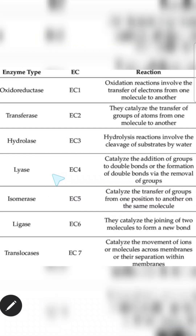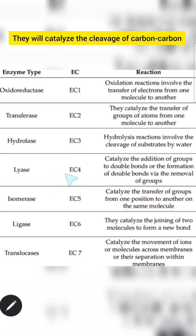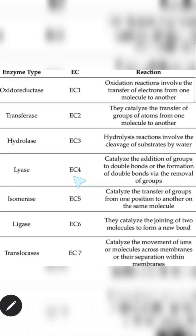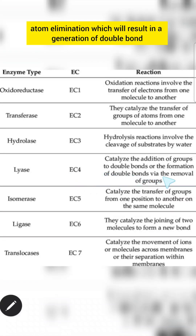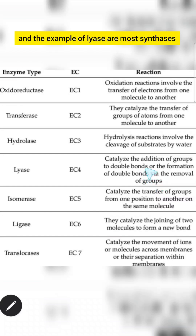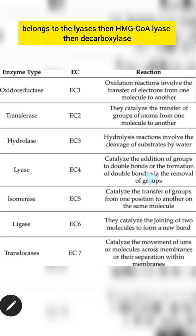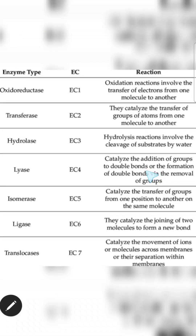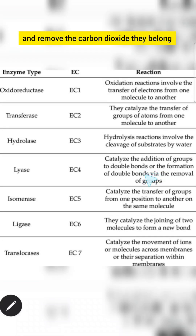The fourth class is lyase. Lyases catalyze the cleavage of carbon-carbon, carbon-oxygen, and carbon-nitrogen bonds by atom elimination, resulting in the generation of a double bond. Examples of lyase include most synthases, HMG-CoA lyase, and decarboxylases, which cleave the carbon-carbon bond and remove carbon dioxide.